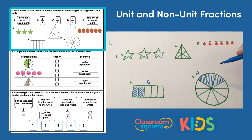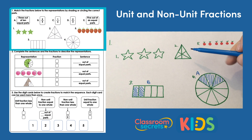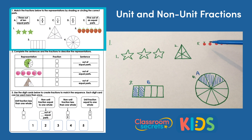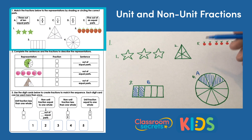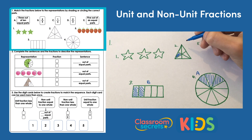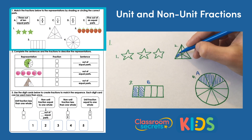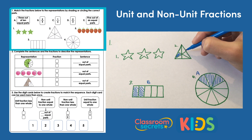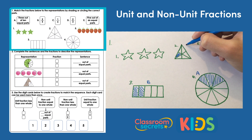C is one sixth, so we're looking at something that's been split into six equal parts. We've got this triangle here, which has six parts, or there are six pieces of fruit over here. I'm going to shade in one of these parts on number two, so I've got one shaded out of six — one sixth. That means two matches to C.